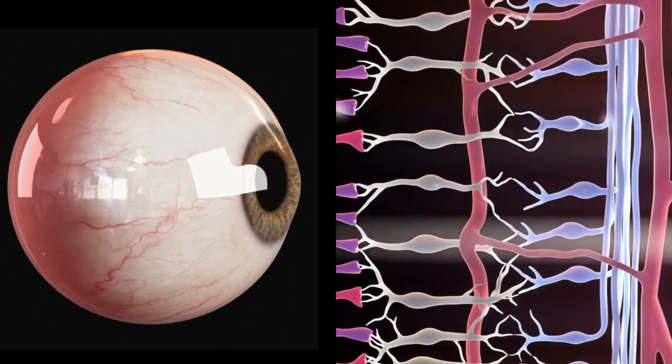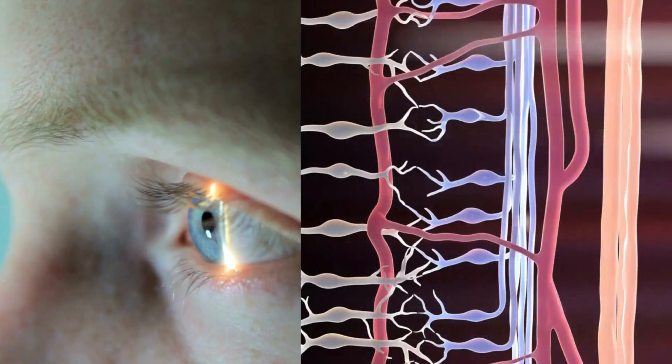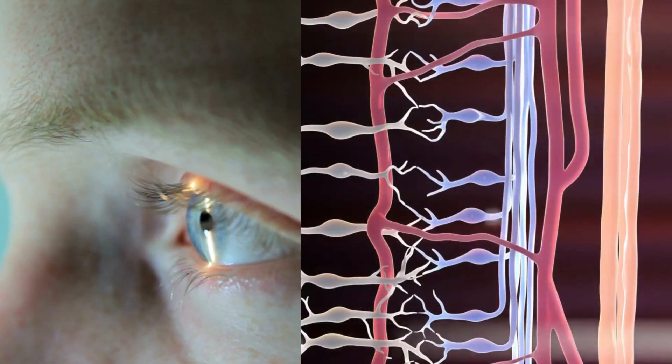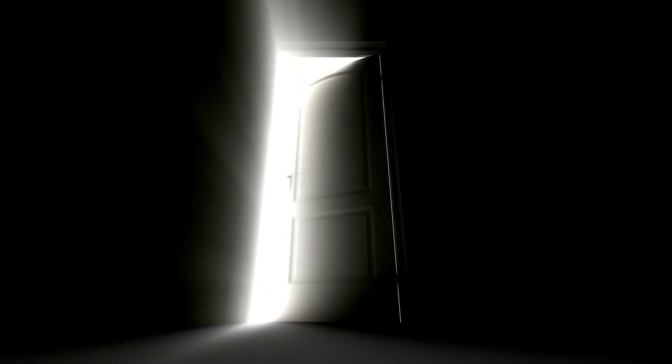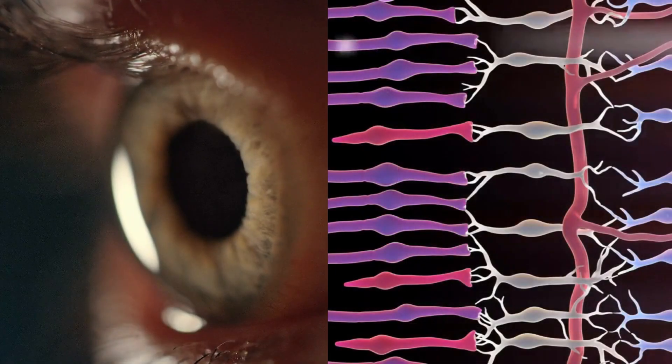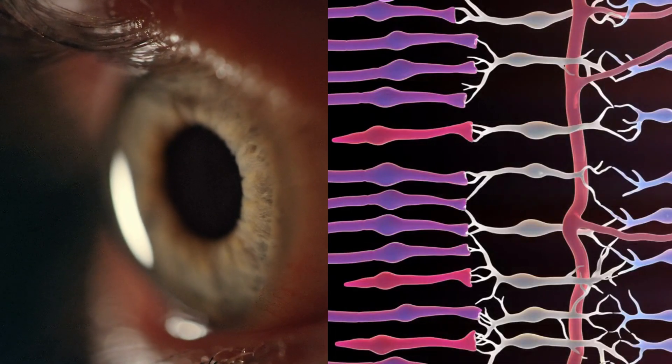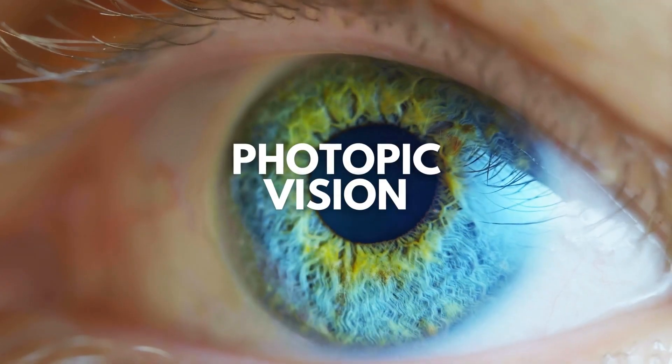While cones are responsible for color vision, they are much less sensitive to low light than rods. When we enter a bright room, the cones are active and the iris stops down to adjust to the light. This is called photopic vision.